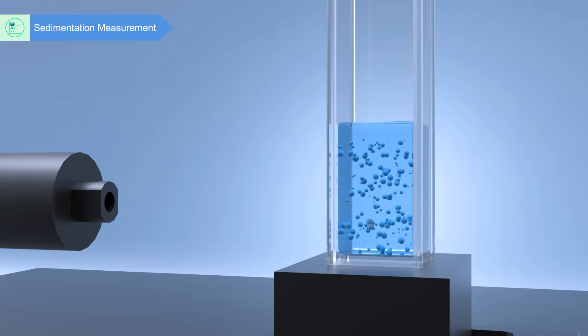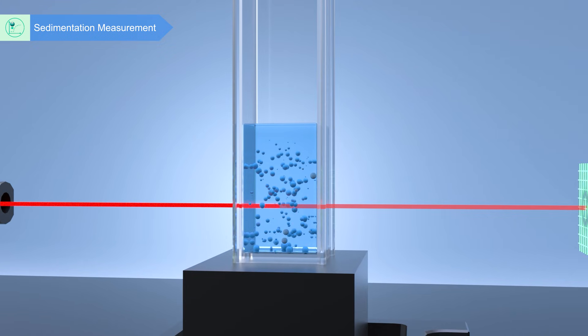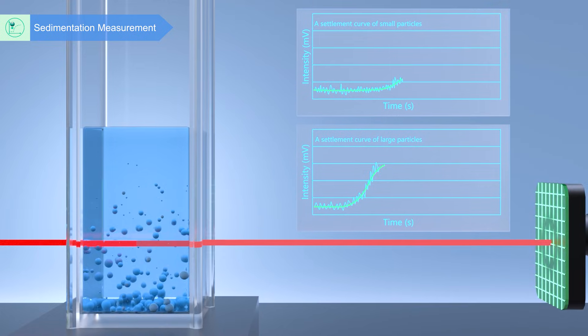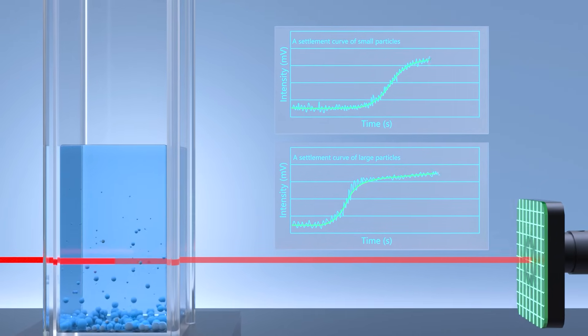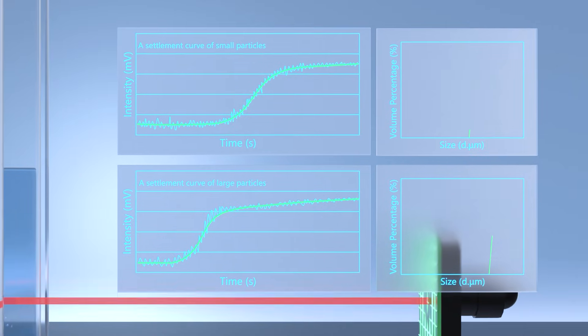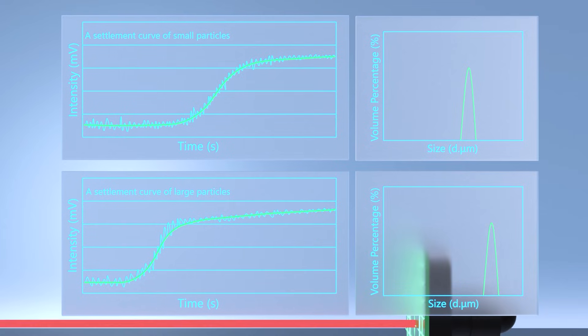When a light beam passes through a sample undergoing sedimentation motion, the intensity of the transmitted light changes in real time. The sedimentation behaviors of particles with different sizes will result in different sedimentation curves. By combining with the MIE theory, the corresponding Stokes equivalent diameter and particle size distribution can be obtained.